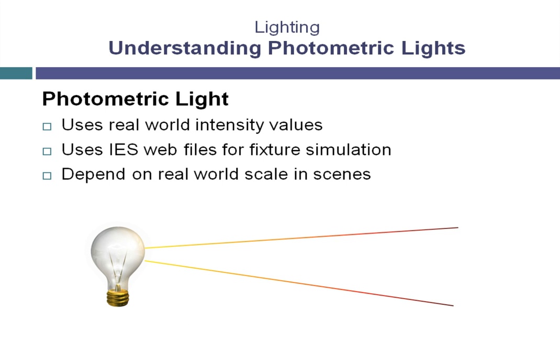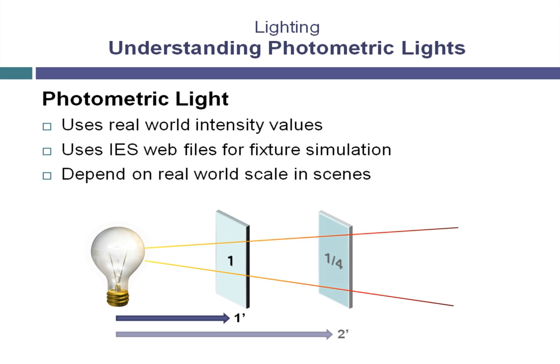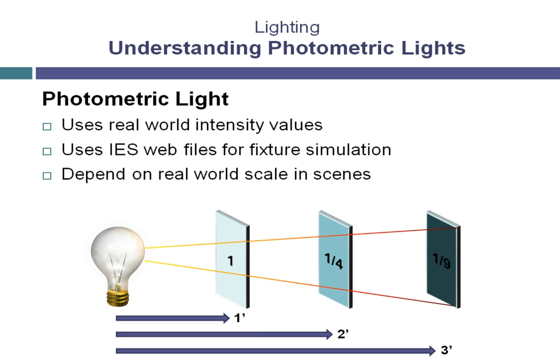Light falls off using something called the inverse square law. Basically, what that means is the further you get away from the light, the less light that reaches the subject. If we put this in graphic terms: if you're one foot away from a light, the brightness value of the light on that surface will be equal to one. If you're two feet away, the brightness value on that surface will be one fourth of the brightness at one foot. And if you're three feet away, the brightness would be one ninth the brightness at one foot. So you can see the further away you get from the light, the less light falls on your subject.